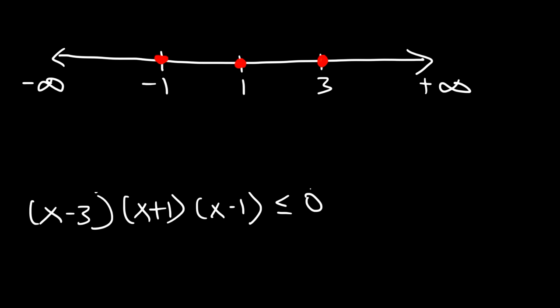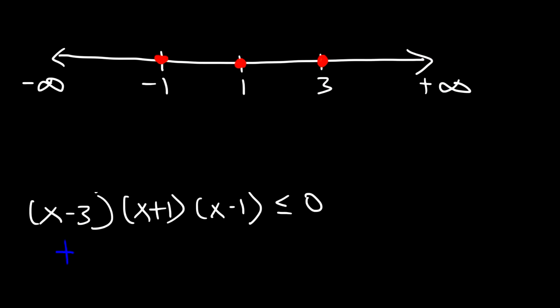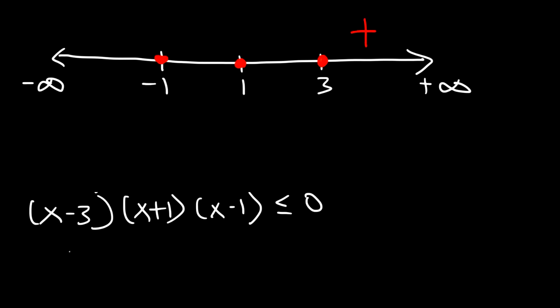We need the expression to be less than 0, or negative, so we don't want the regions where it's positive. Let's test the signs. Starting with 4 — between 3 and infinity — 4 minus 3 is positive, 4 plus 1 is positive, 4 minus 1 is positive. Multiplying three positive numbers gives a positive result. Now for a number between 1 and 3, let's try 2: 2 minus 3 is negative, 2 plus 1 is positive, 2 minus 1 is positive. Multiplying those three signs together gives a negative number.